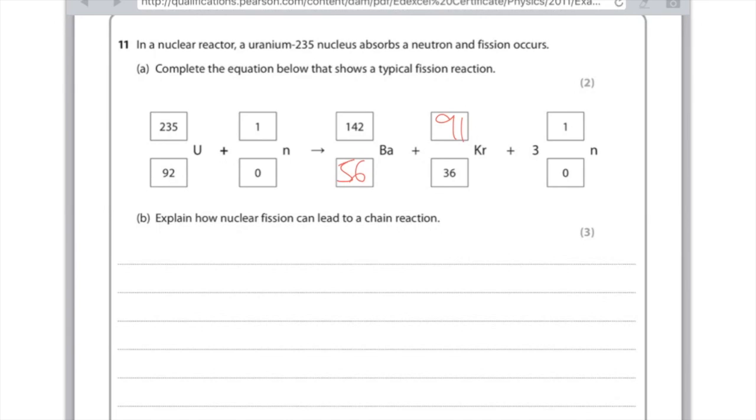B, explain how nuclear fission can lead to a chain reaction. So for the first mark, you want to say that the neutrons are released, that these are then absorbed by other uranium nuclei, and this causes further fission reactions. For another mark, you could have said that neutrons are slowed by the moderator, but I don't really know why you'd think to write that particularly.